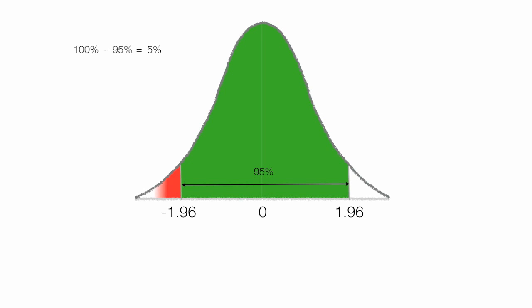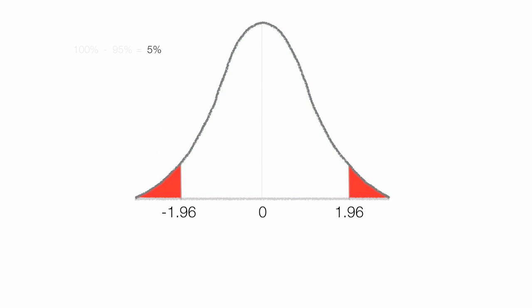I take 5% and distribute it in these two red areas. Or 2.5% plus 2.5% is 5%, and I use that in both of these two tails.